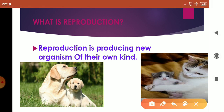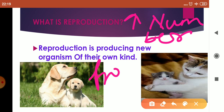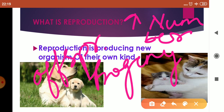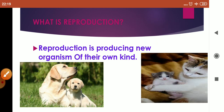Reproduction is a process by which an organism increases its number. The new organisms formed are called progeny, or we can also call them offsprings. The progenies formed are of the same kind as the parents. This means that if dogs are performing the process of reproduction, then they are going to produce dogs, and from cats, cats are produced.